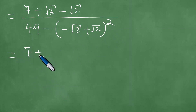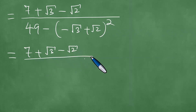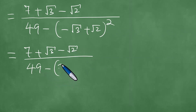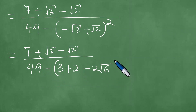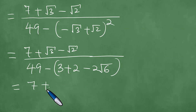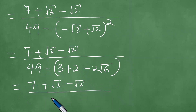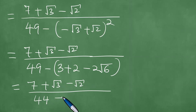The numerator therefore becomes 7 plus the square root of 3 minus the square root of 2, divided by 49 minus — if you square these, it becomes 3 plus 2 minus 2 times the square root of 6. So in the end, what we're getting: 3 plus 2 is 5, and 49 minus 5 is 44. The denominator is 44 plus 2 times the square root of 6.